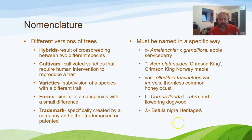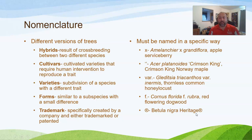For trademarks you'll see the ® symbol — Betula nigra 'Heritage'® is a specific version of river birch cultivated by a company and given the name Heritage river birch. There are all sorts of different naming designations you'll encounter.